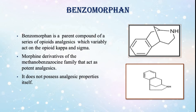Benzamorphan. Benzamorphan is a parent compound of a series of opioid analgesics which variably act on the opioid kappa and sigma receptors. It consists of morphine derivatives of the methanobenzazocene family that act as potent analgesics. It does not possess analgesic properties itself.